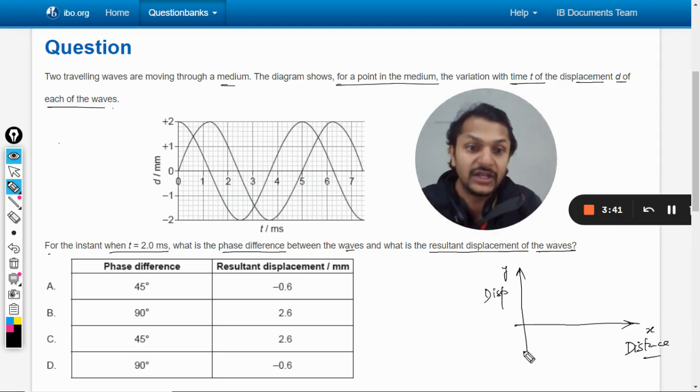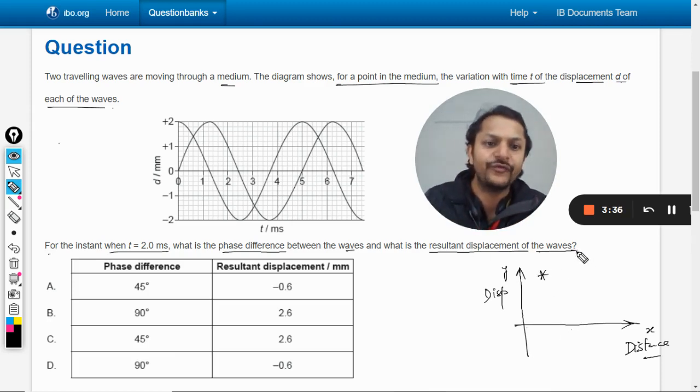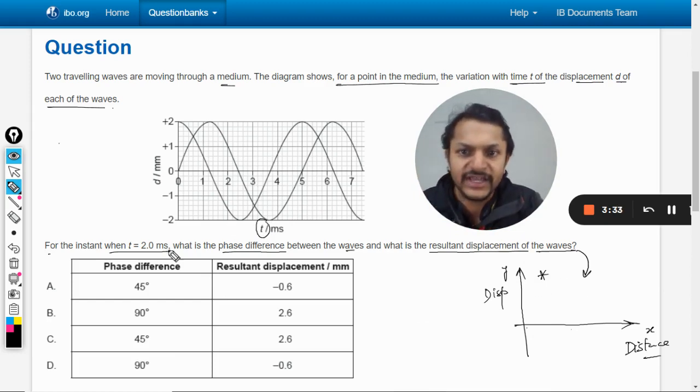The distance of the particles from the first position - which particle are we talking about? This graph pertains to the wave. But in this graph you can see that on the x-axis it is time, it's not distance.